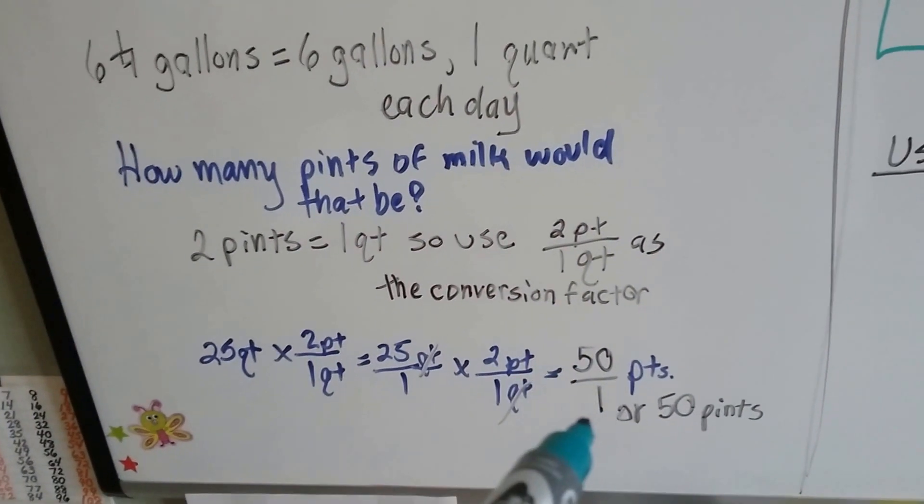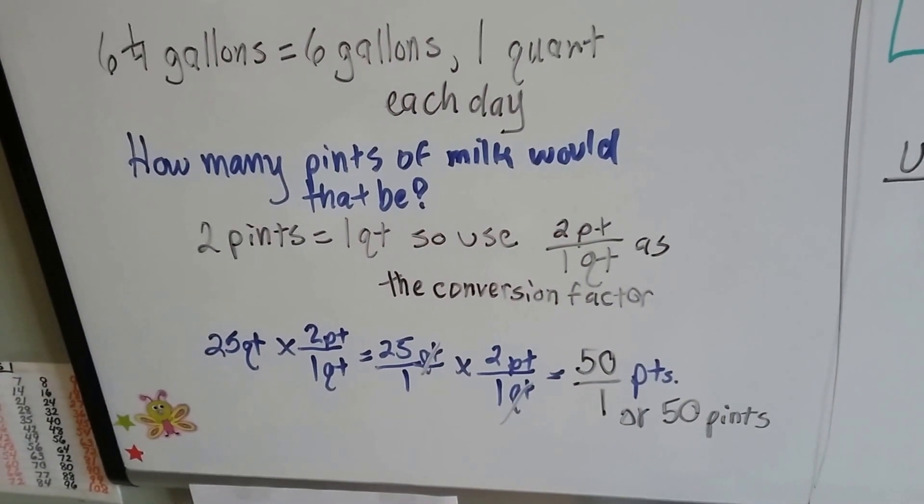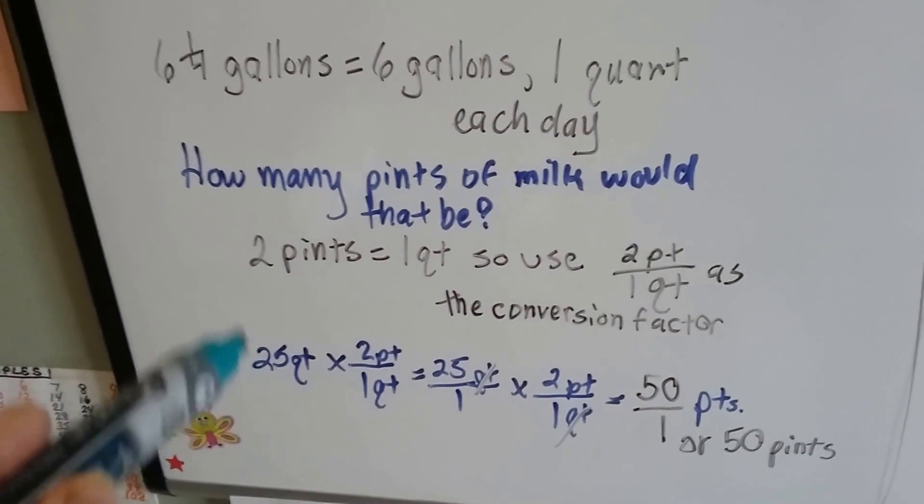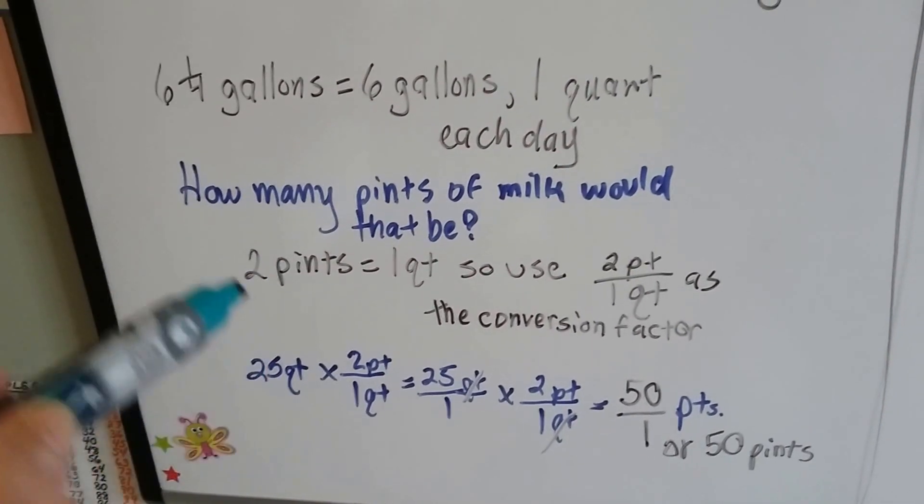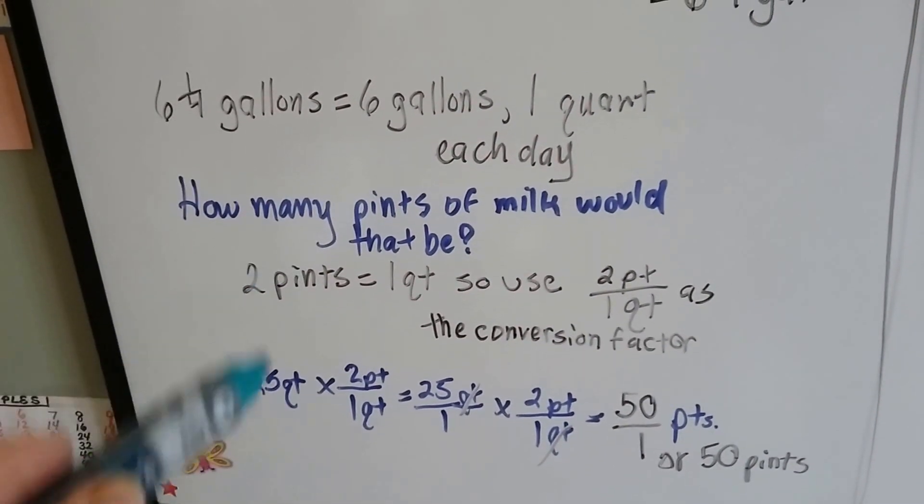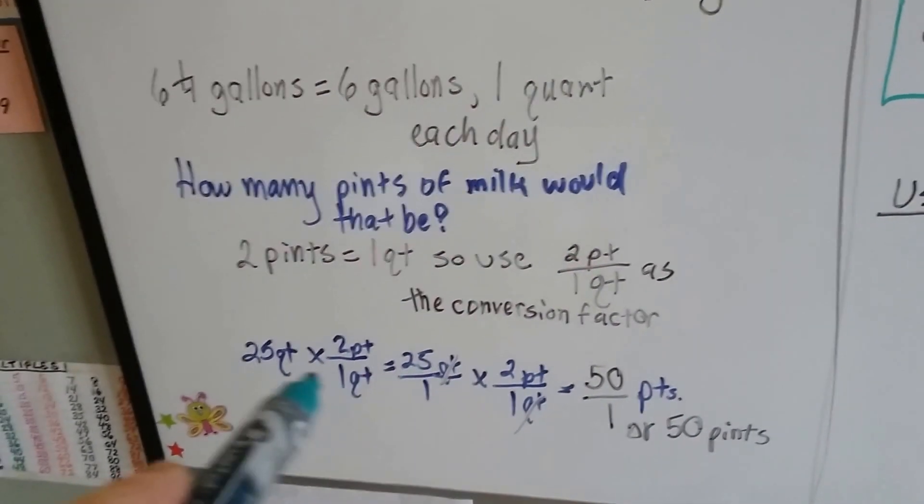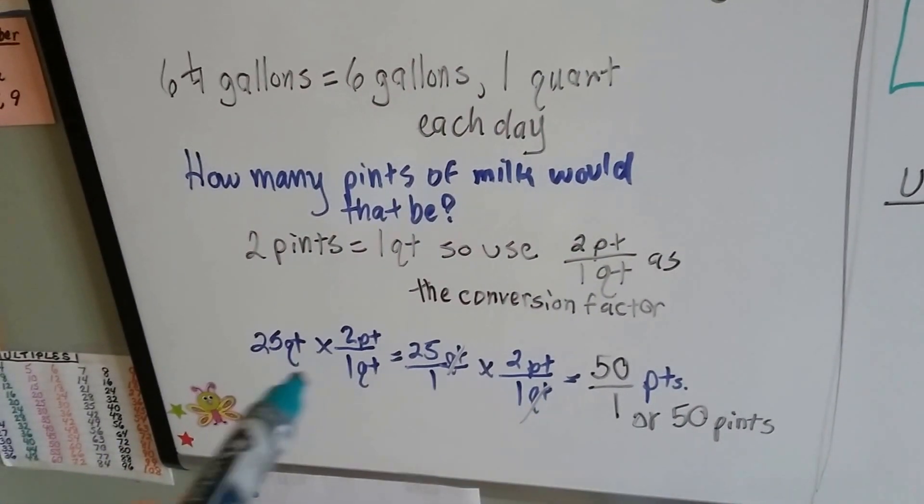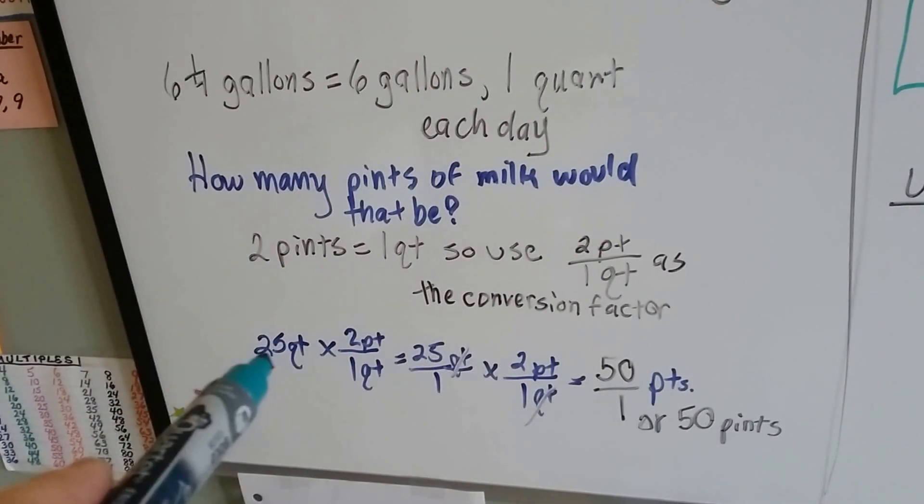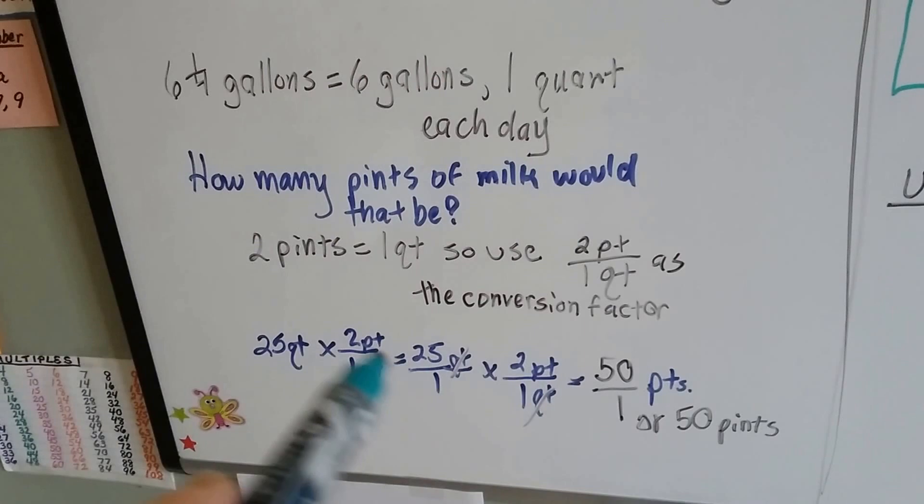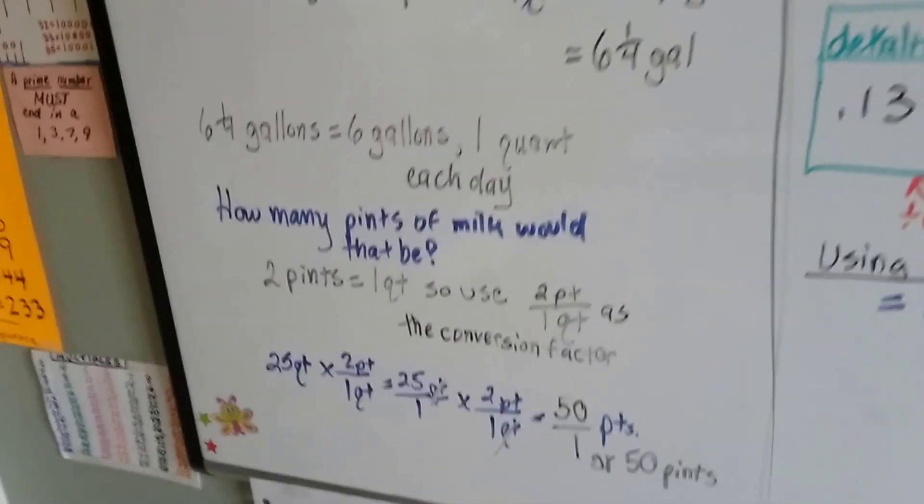We end up with 50 over 1 pints, and simplified, that's 50 pints. Now, we could have just said there's 2 pints in a quart, there's 25 quarts, 2 times 25 is 50. But they wanted you to see how it was all spelled out with the conversion factor. That was the point of doing it this way. This might have been an easy problem. You might come across a very difficult one where it'll help to do this and to cancel out. So they just want to show you how to do it with an easy one.